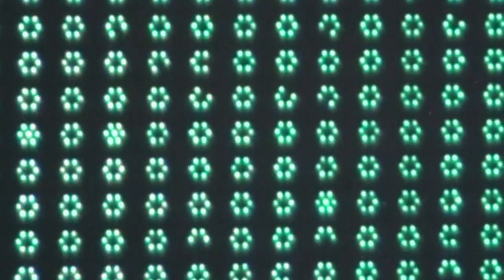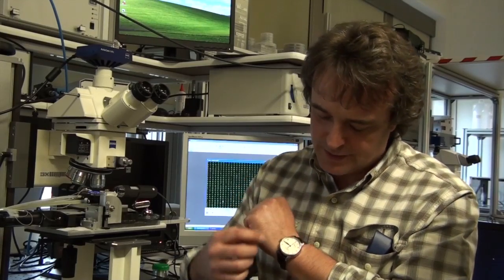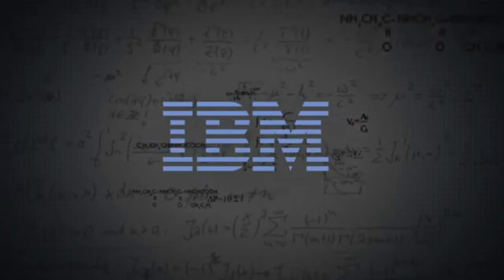Even we cannot do exactly the same color pattern again. In principle, we can print these arrays on any high-value object and integrate them on jewelry or watches. We could print it on a tiny spot, and with a microscope you could verify that this is a real watch and not a fake.